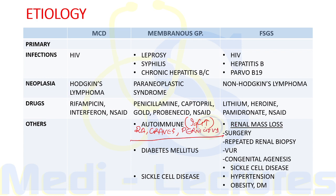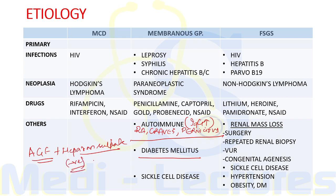The IgG produced in autoimmune disorders gets deposited on the glomerular basement membrane leading to membranous glomerulopathy. Diabetes can also lead to membranous glomerulopathy: advanced glycation end products bind with heparan sulfate, which is present on the glomerular basement membrane and is responsible for its negative charge. Sickle cell disease can also lead to membranous glomerulopathy.